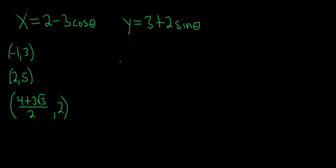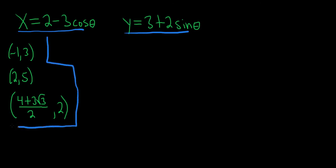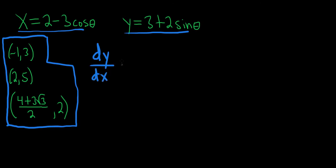In this problem we have to find the equation of the tangent line at three different points given these parametric equations. Before we do any of these problems, let's start by finding the slope of the tangent lines. The slope of the tangent lines is given by the derivative. The formula for the derivative is dy/dx, and that's equal to dy/dt over dx/dt.